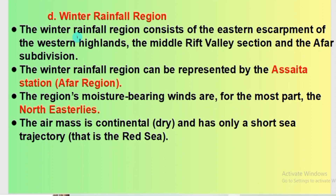The Winter Rainfall Region is the fourth region. It consists of the eastern escarpment of the western highlands, the middle Rift Valley section, and the Afar subdivision. The Winter Rainfall Region can be represented by Asaita Station, which is found in the Afar Region.